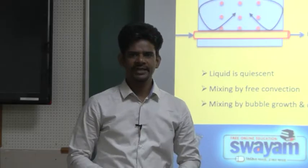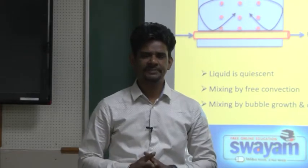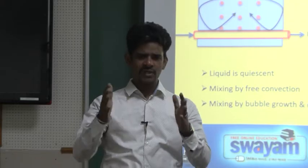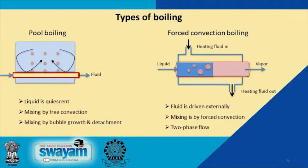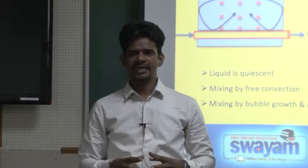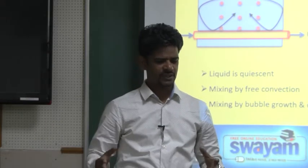There are two kinds of boiling: pool boiling and forced convection boiling. In pool boiling the liquid is static — quiescent macroscopically — although mixing happens via free convection and bubble dynamics. In forced convection boiling the liquid is sent through a tube by a pressure gradient or other external means, and mixing happens by both natural and forced convection. Often a two-phase flow exists in the tube because it starts as liquid, vapor forms in the middle, and it is all vapor toward the end.